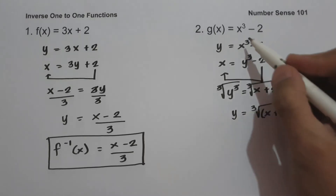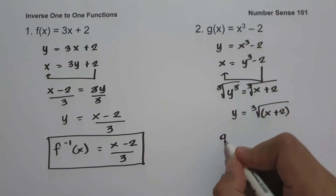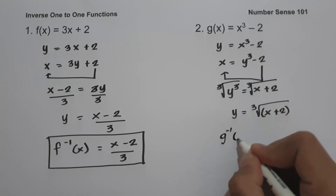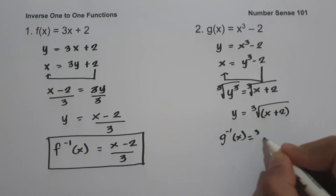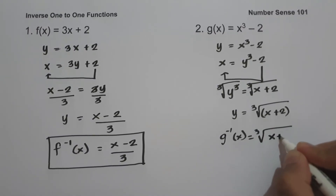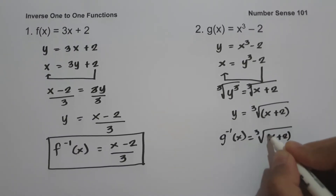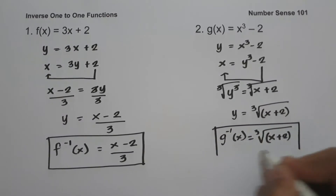Therefore, the inverse of g(x) = x³ - 2 is g⁻¹(x) = ∛(x + 2), and this will be our answer.